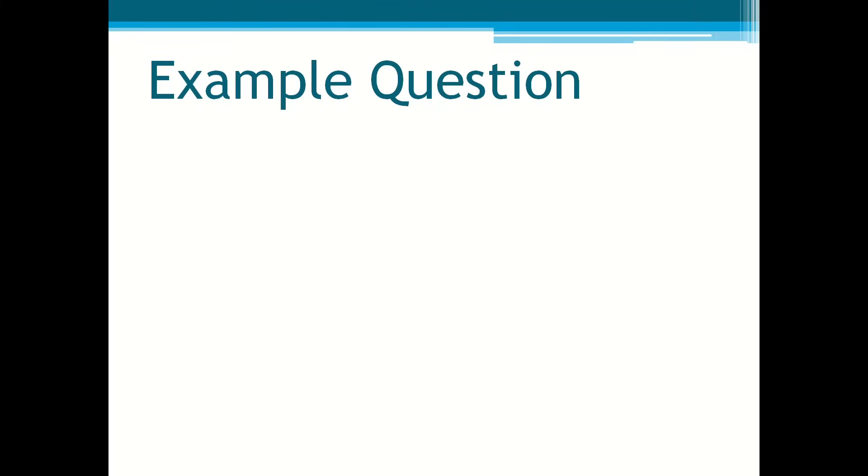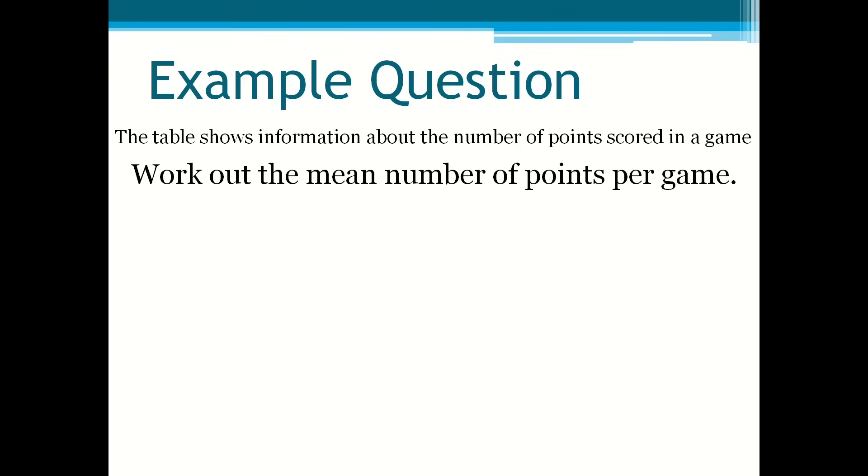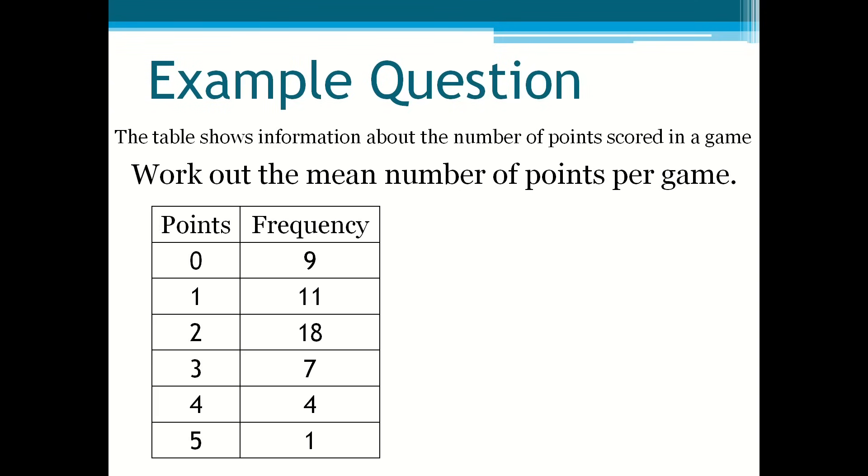Example question. The table shows some information about the number of points scored in a game. Work out the mean number of points per game. Here is the table with the number of points and the frequency. First you add the frequencies together.